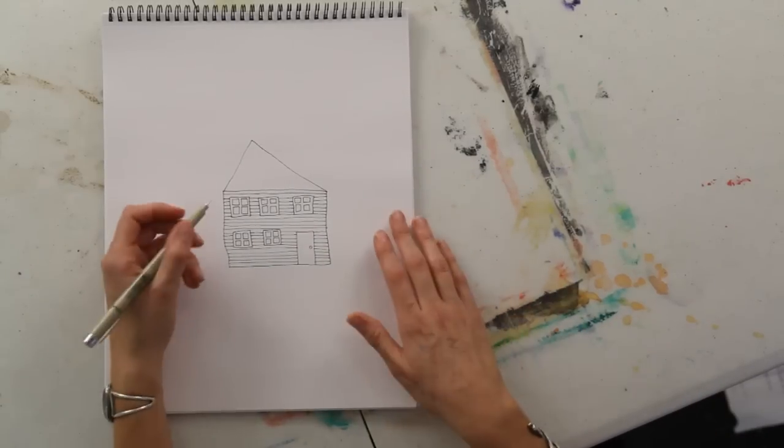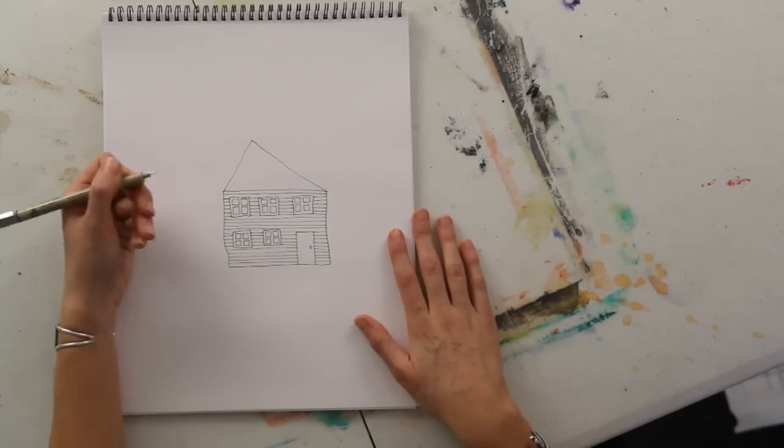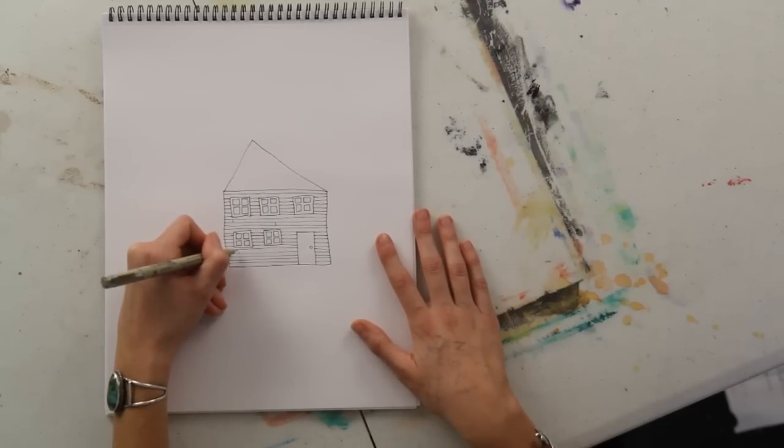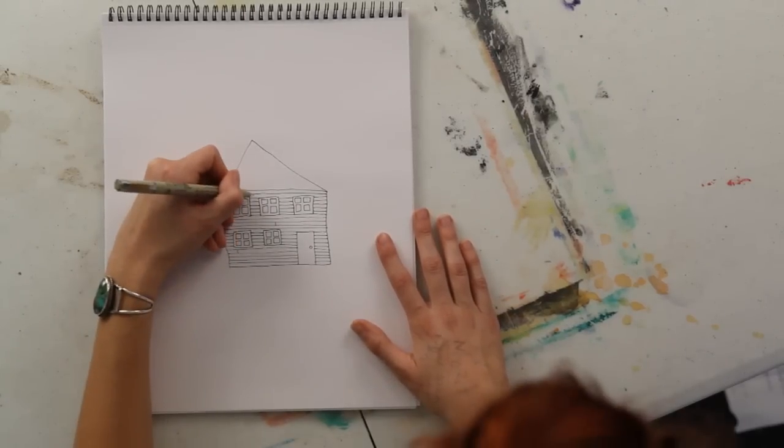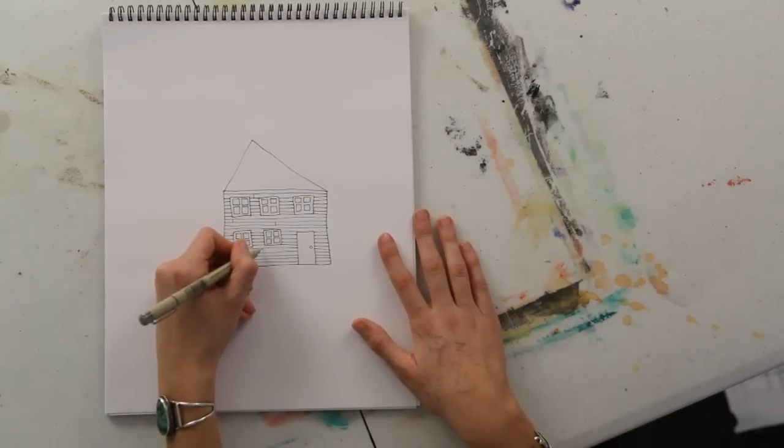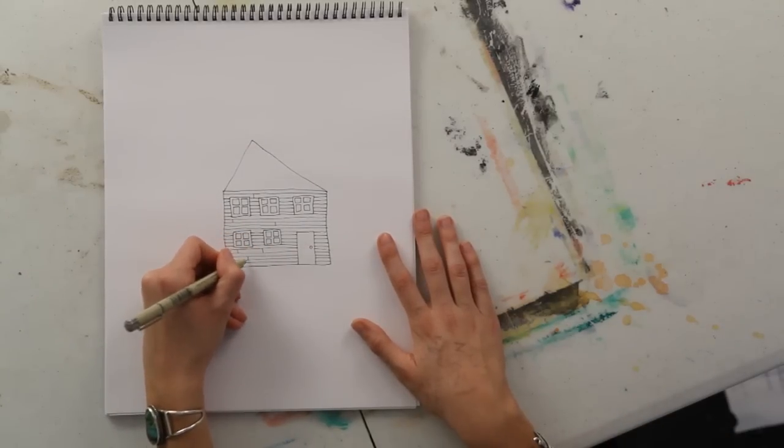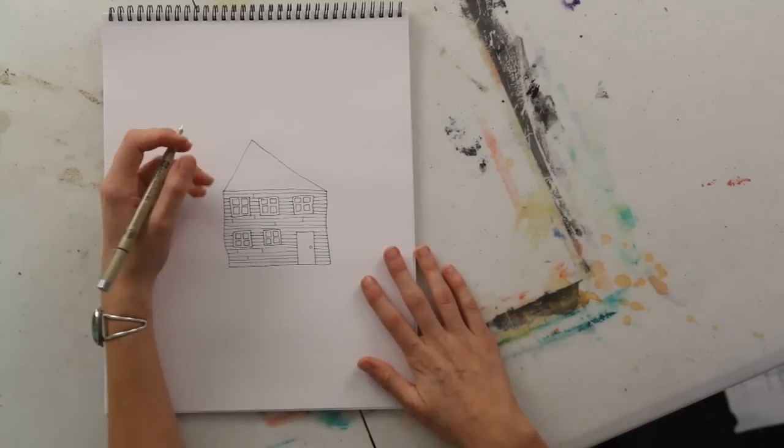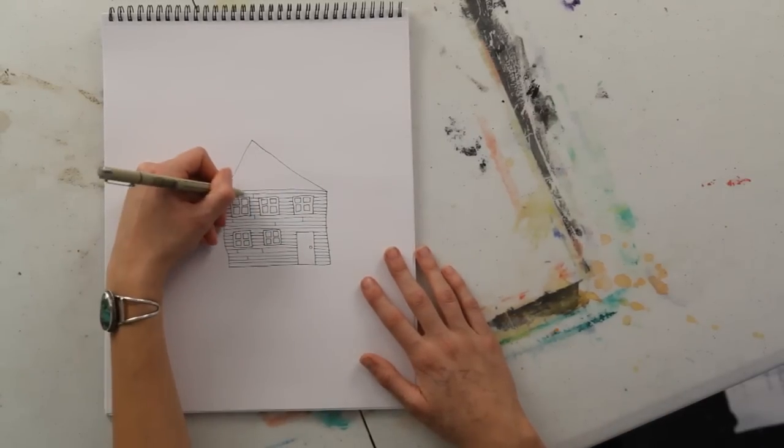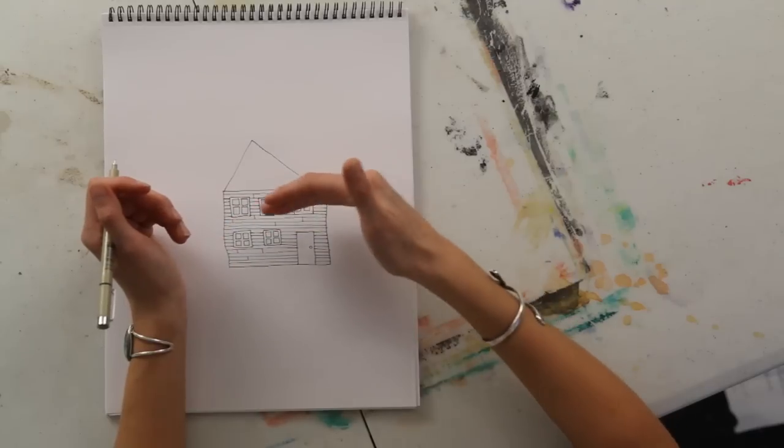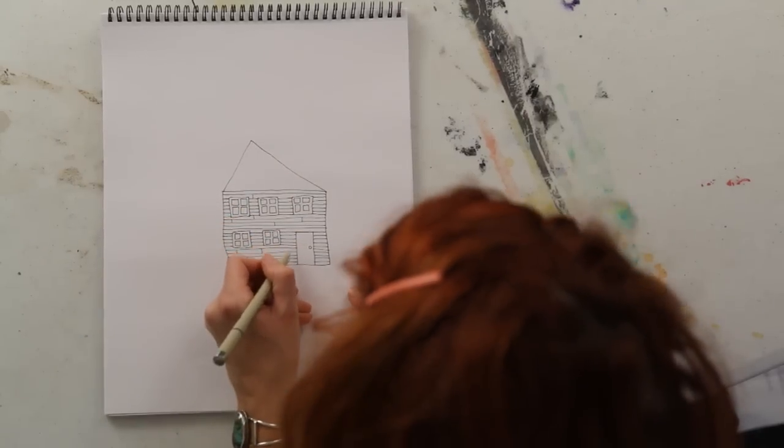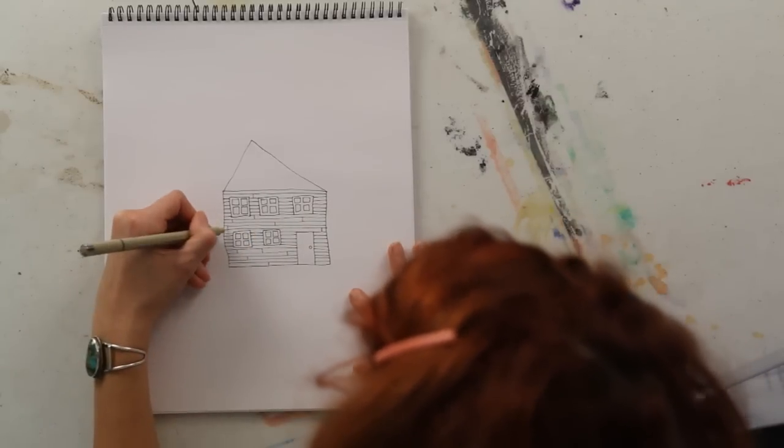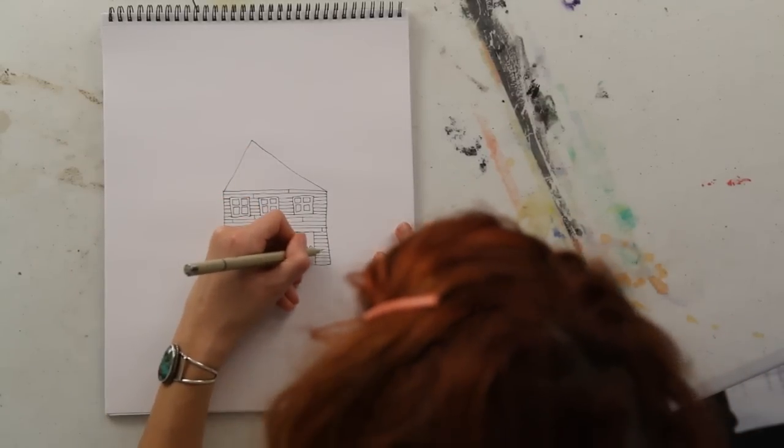Once you've done that, you can add some little horizontal or little vertical lines kind of in random places within those horizontal lines just to make it appear that there are boards. And you can even make a whole bunch of vertical lines evenly spaced out along those horizontal ones, and that would make it seem like there are bricks. But I'm going to keep it that this house I'm drawing is made out of wood.